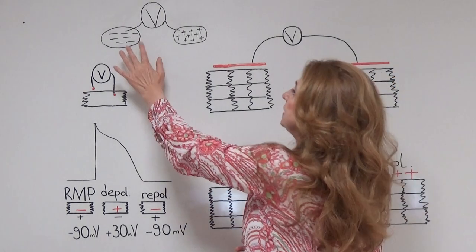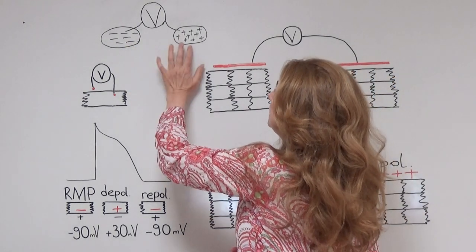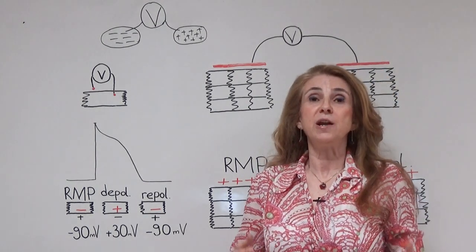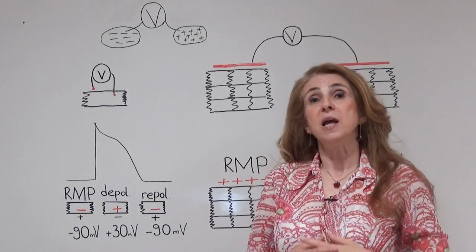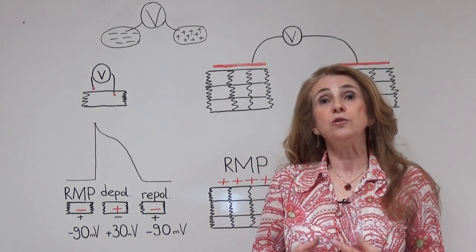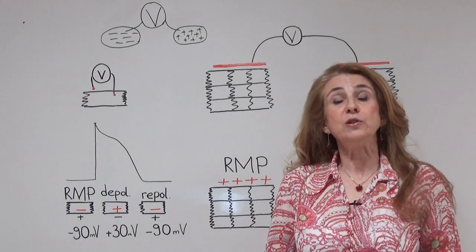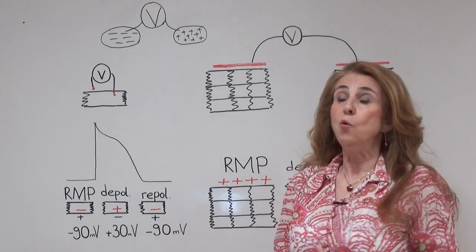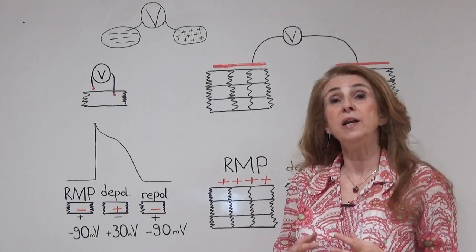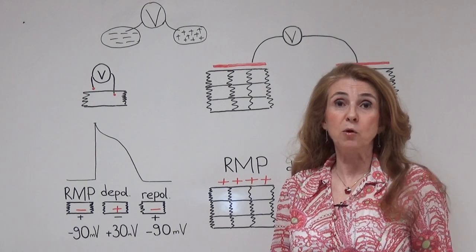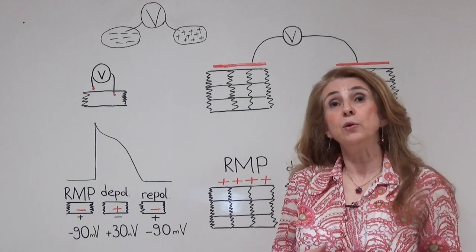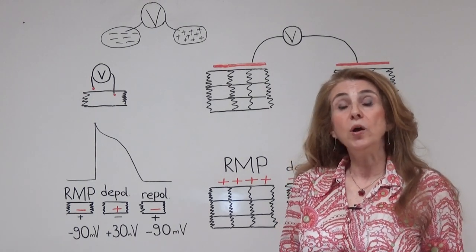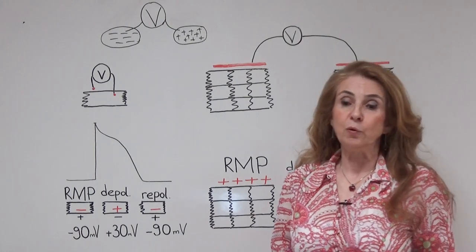Each of these electrodes is placed in one of the areas, so each area is connected to one electrode which is connected to the voltmeter. One electrode is the positive electrode, the other is the negative or neutral electrode.